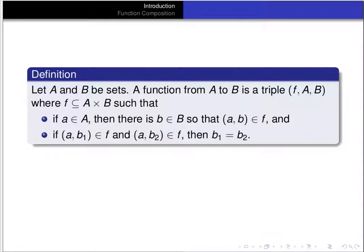Let's start with some definitions. If A and B are sets, a function from A to B is a triple (f, A, B), where f is a subset of A cross B — so it's a relation between A and B.